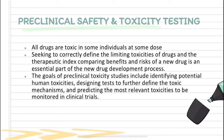Regarding preclinical safety and toxicity testing: all drugs are toxic in some individuals at some dose, because every individual has a different tolerance. Seeking to correctly define the limiting toxicities of drugs and a therapeutic index — comparing benefits and risk of a new drug — is an essential part of the new drug development process. The goals of preclinical toxicity studies include identifying potential human toxicities, designing tests to further define toxic mechanisms, and predicting the most relevant toxicities to be monitored in clinical trials.